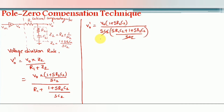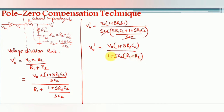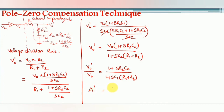After the SC2 terms cancel, the final transfer function of the external compensating network — called A dash — is: A dash = (1 + S·R2·C2) / (1 + S·C2·(R1 + R2)). This is the gain of the external compensating network.